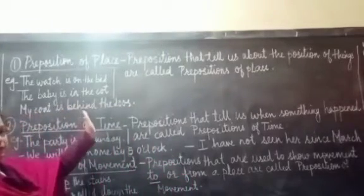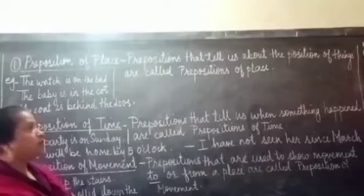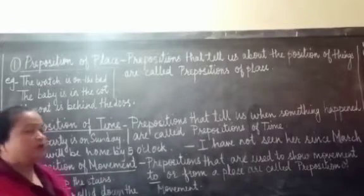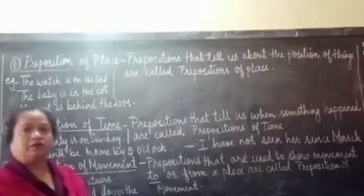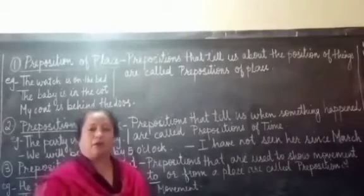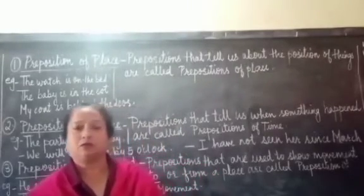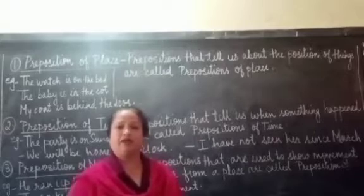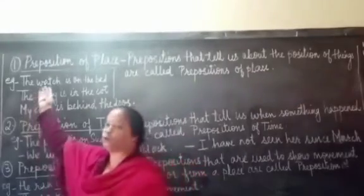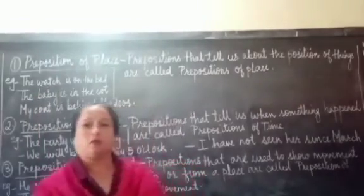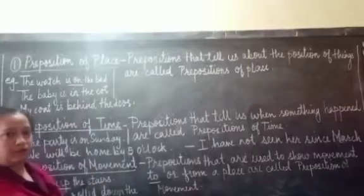So what is a preposition of place? Prepositions or words that tell us about the position of things are called prepositions of place. For example: The watch is on the table. Here we are talking about the watch. 'Pre' means before and 'position' means place — so where is the watch kept? It is kept on the table, so 'on' is the preposition of place.